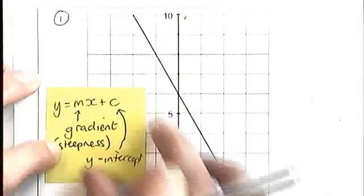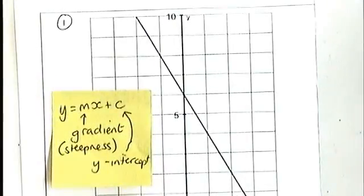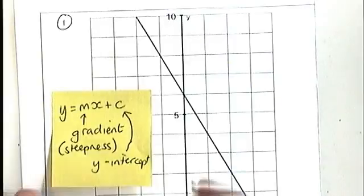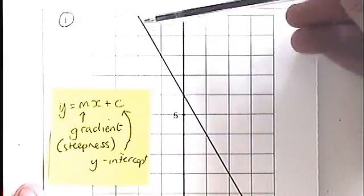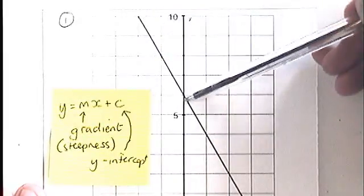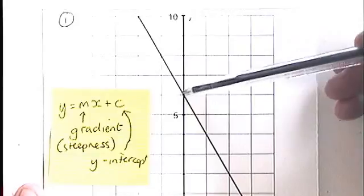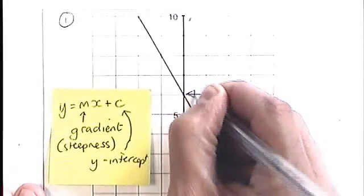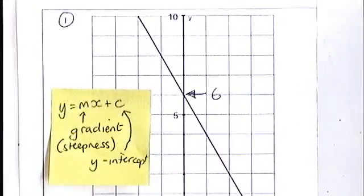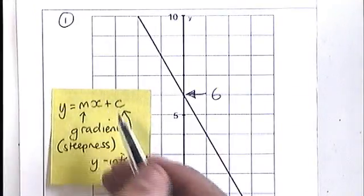So what are we going to do? We need to find these two values. We need to find the value of c, which is the y-intercept, and once again, this is where the y-axis crosses the straight line that you're looking at. So here's our straight line, here's the y-axis. Where do they cross over? What's that point there? That is 6. So that value of c at the end of there is going to be a 6.